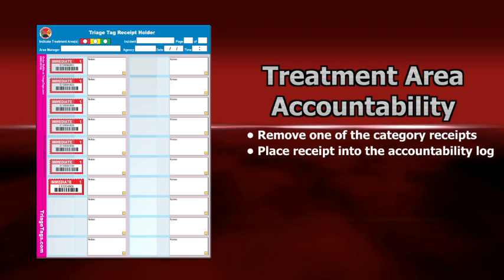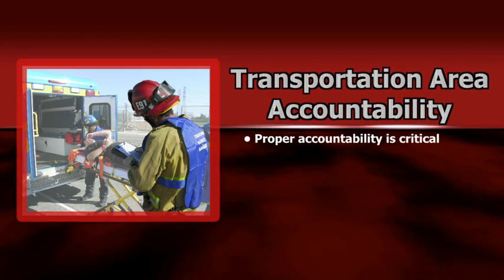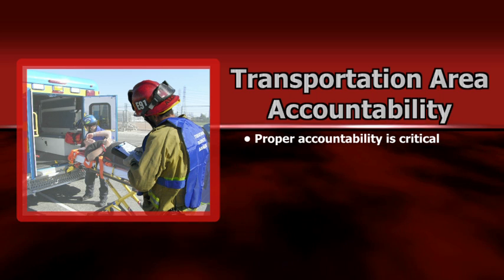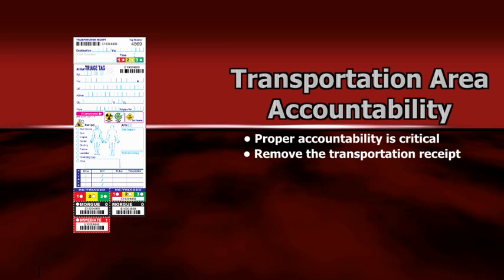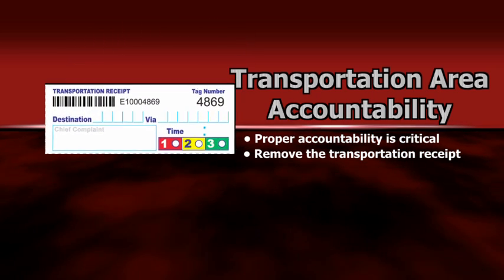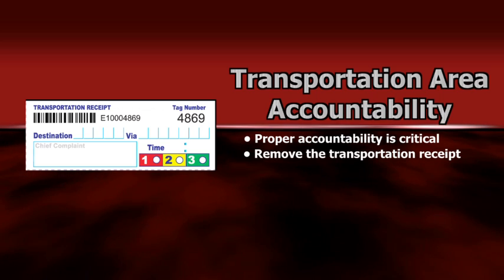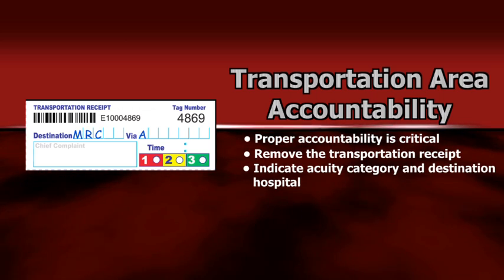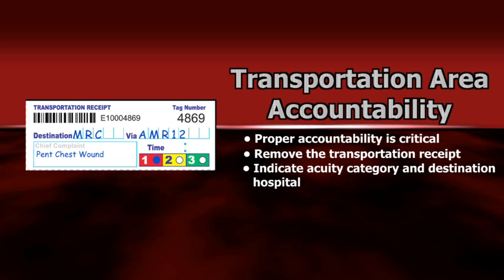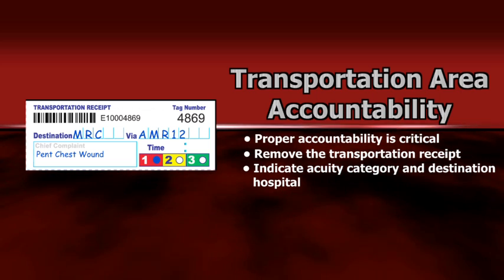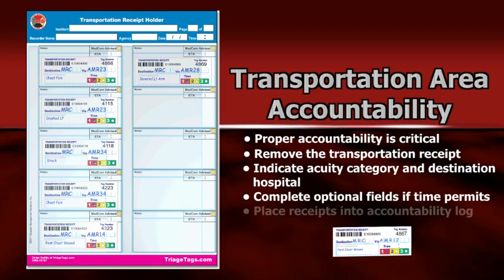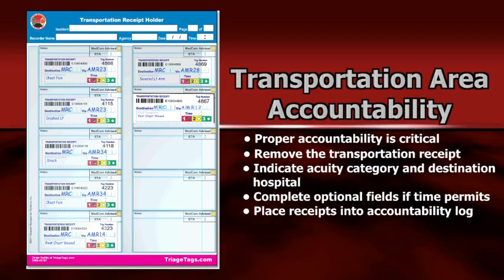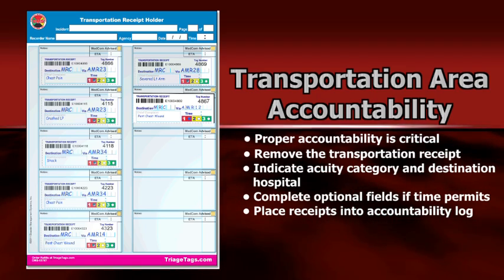Proper patient accountability in the ambulance loading area is critical for ensuring accurate bed availability counts and patient tracking. Just prior to a patient being loaded into an ambulance, the transportation receipt located on top of the DMS triage tag is removed by the transportation group supervisor or a designated ICS position. Mandatory fields on the transportation receipt, such as acuity category and destination hospital, must be completed. Optional fields on the back of the transportation receipt are available if time permits or policy requires. Completed transportation receipts are placed in an accountability log for quick reference and post-incident reporting.